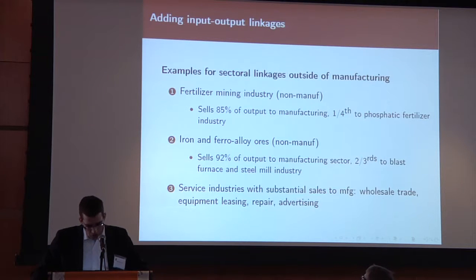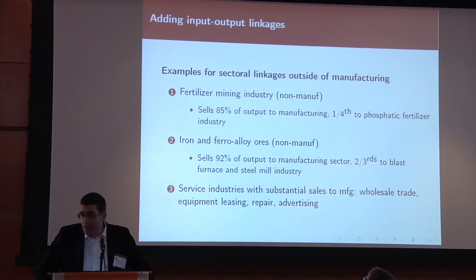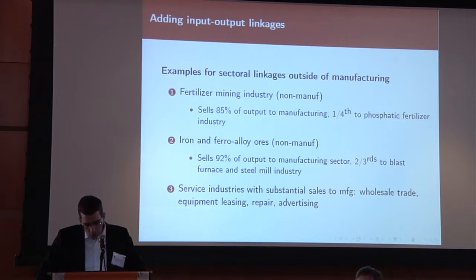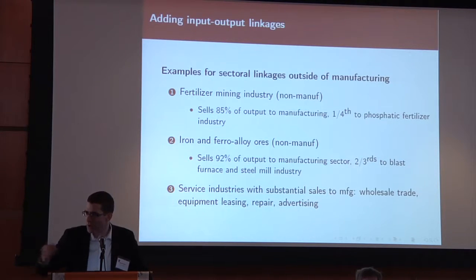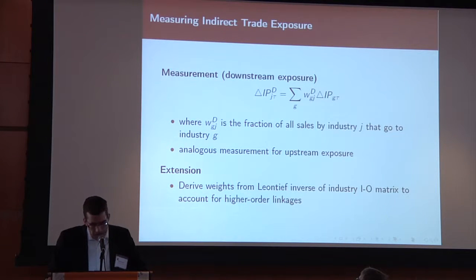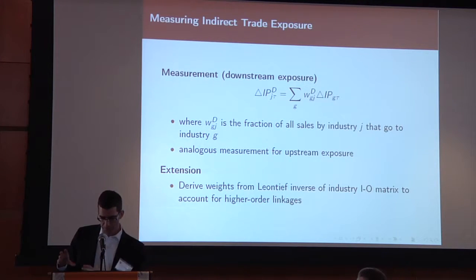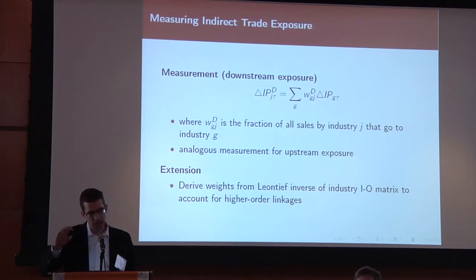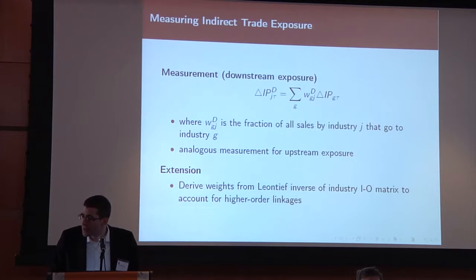Manufacturing industries mostly sell to or buy from other manufacturing industries, but there are important linkages outside the manufacturing sector. A lot of mining industries sell almost all their output to manufacturing. Also, there are services industries with many ties to manufacturing. The wholesale business, for instance, buys a lot from manufacturing and also sells to it. We measure this indirect trade exposure by taking the share of industry J's sales going to another industry G, using those fractions as weights multiplied with the direct trade exposure of those customer industries G, summed over all industries J sells to.